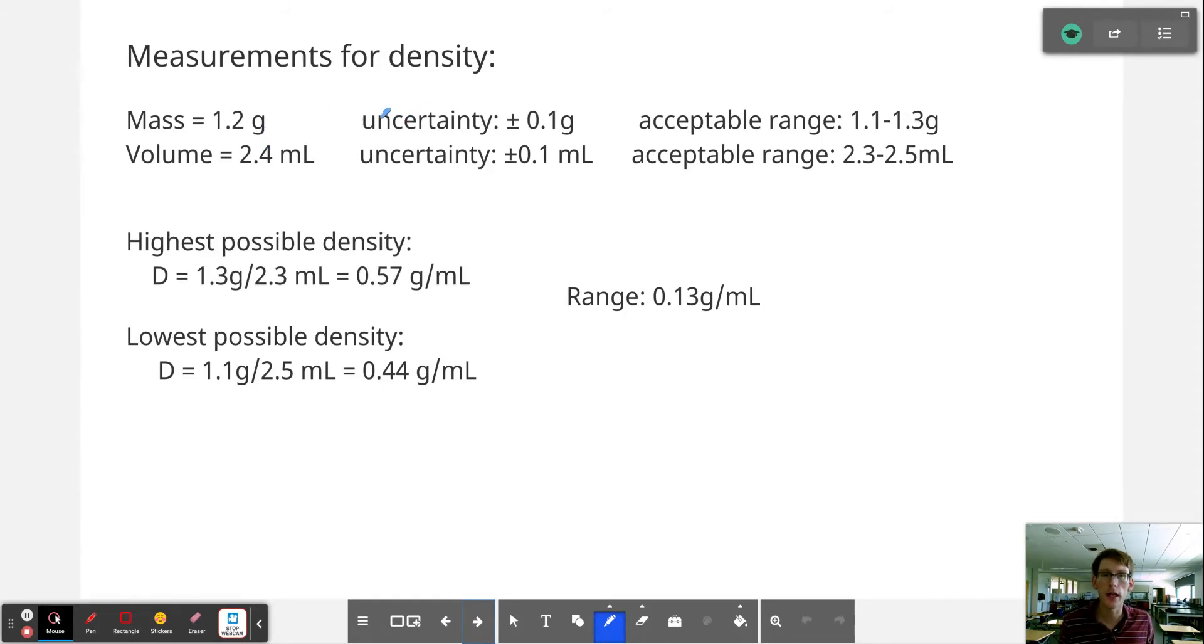Now the uncertainty in the measurement of mass is 0.1 grams in either direction, meaning that although we read 1.2 grams, because we can't be very certain of that last digit, that 0.2, we can say that the range that it truly could be is 1.1 to 1.3 grams. It's definitely in the ones and it's definitely between 1.1 and 1.3, but we just can't be 100% sure that it's really spot-on the 1.2 grams.